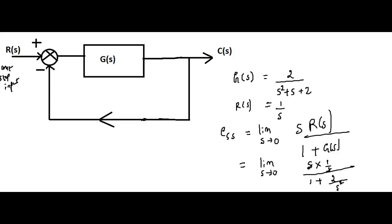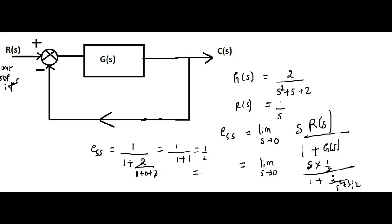Substituting G(S) = 2/(S²+S+2) and putting S = 0, we get ESS = 1 / (1 + 2/(0+0+2)) = 1 / (1 + 1) = 1/2. So the steady state error is 0.5.